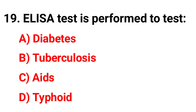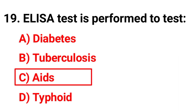Question 19: ELISA test is performed to test — the correct answer is option C.